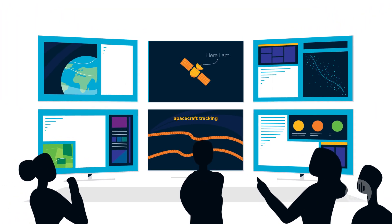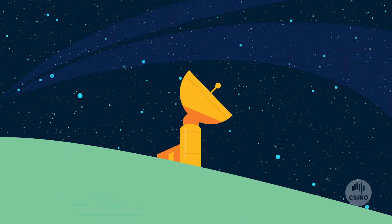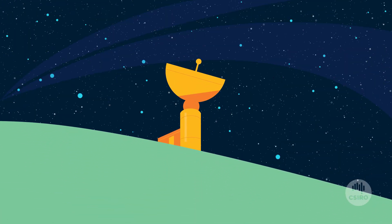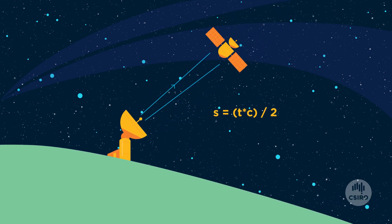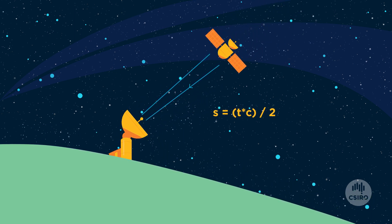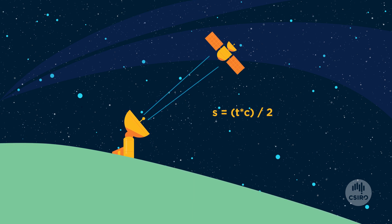Working out where the spacecraft is, receiving data from it and sending commands. We work out the spacecraft's distance by sending it a radio message and having it reply straight away. Radio waves travel at the speed of light, so the time it takes to get the message back tells us how far away the spacecraft is.